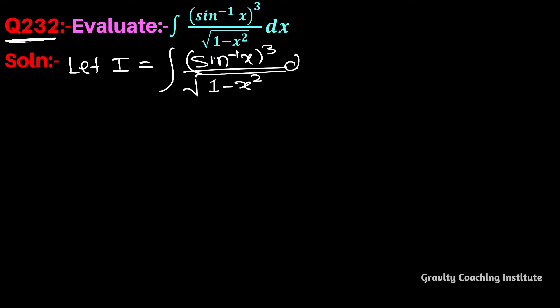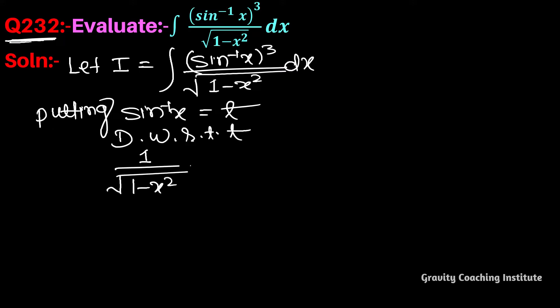Then, if we put sin inverse x to differentiation, this is 1 upon square root 1 minus x square. We put sin inverse x equal to t. Now differentiate with respect to t. Sin inverse x ka differentiation hota hai 1 by square root 1 minus x square.